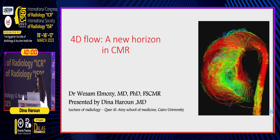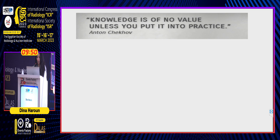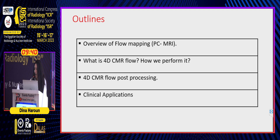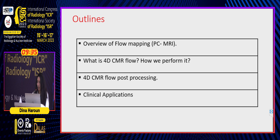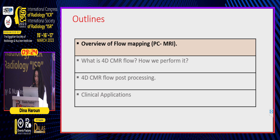We are going to talk about the 4D flow — a new horizon in CMR. Knowledge has no value until it is processed and practiced, and that's what we go through from the 2D flow to the 4D flow. The lecture outlines include: an overview of flow mapping, phase contrast MRI (the 2D flow), what is 4D flow, how we perform it, 4D CMR post-processing, and clinical applications.